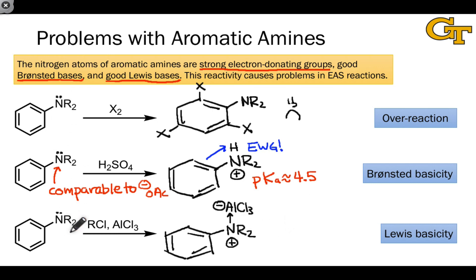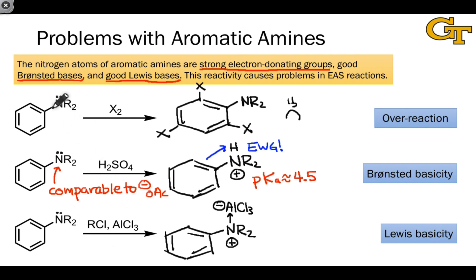All three of these behaviors of the amino nitrogen create problems in electrophilic aromatic substitutions of amines. We're going to resolve these problems later, but I want to mention them now because they influence how we think about synthesis. It's going to be difficult to use an aniline in an electrophilic aromatic substitution reaction, and we need an indirect route to get to substituted anilines, which we'll see in a later video.